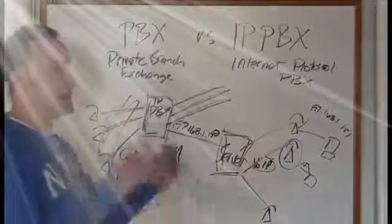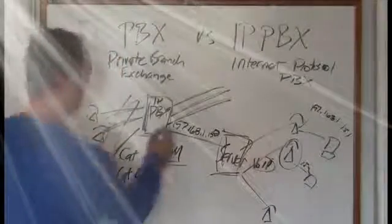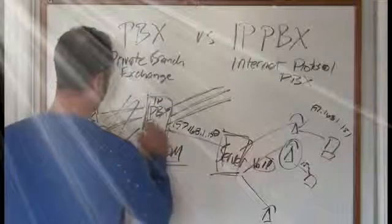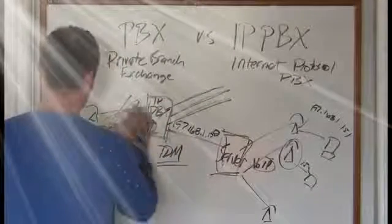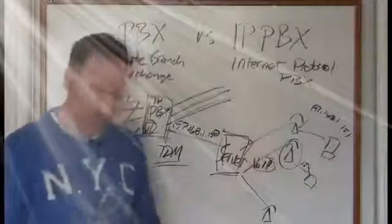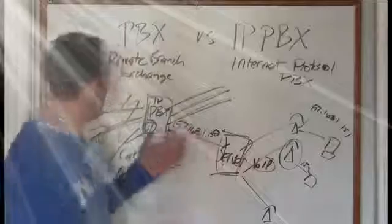So this is all going to reside on the LAN. There's actually hybrids, getting off the subject a little bit, where you have both. It's tied into the server and then you can also have SIP cards that are digital. You can still have digital phones and you can have IP phones and all that kind of stuff.